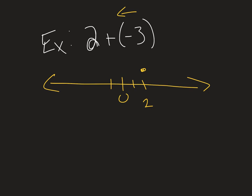So I'm going to go left, 1, 2, 3. There I am. And I'm at negative 1. So 2 plus a negative 3 is negative 1.